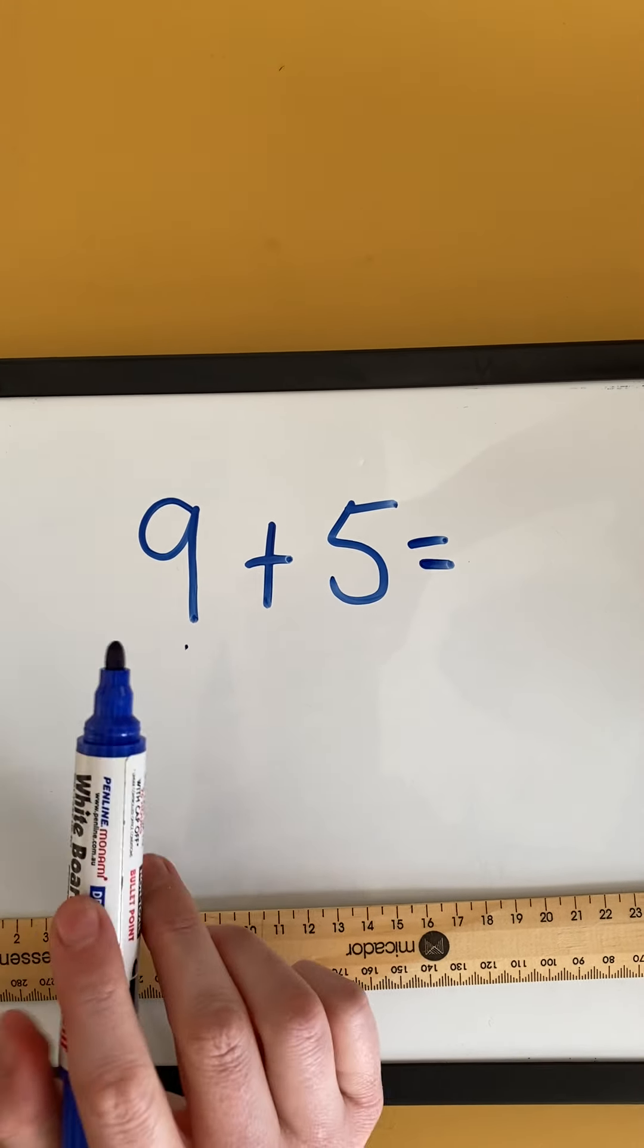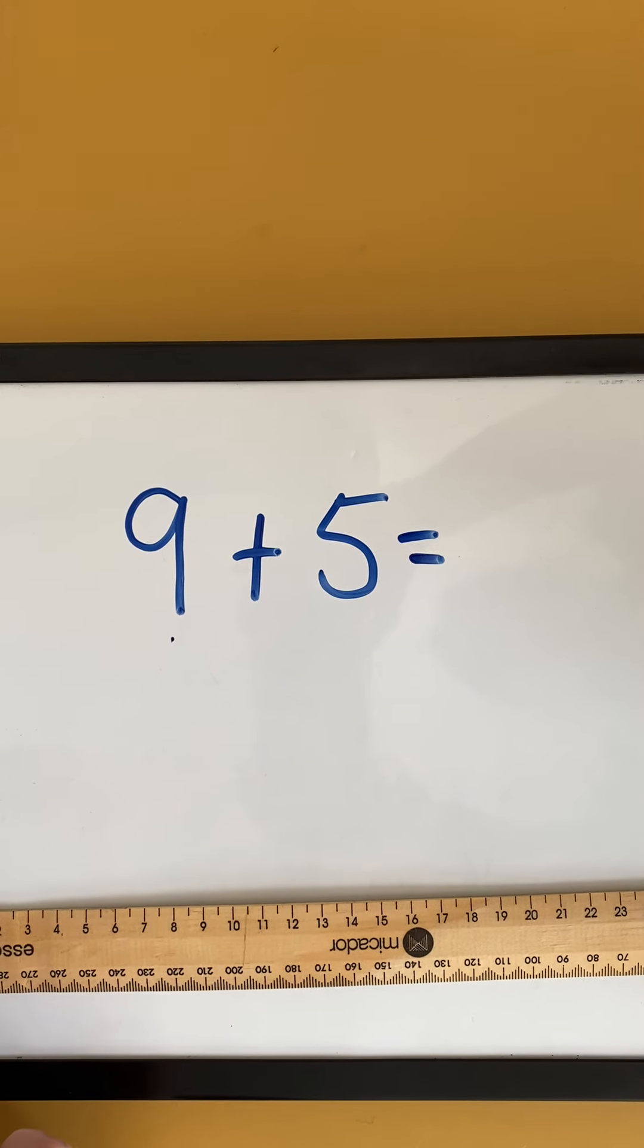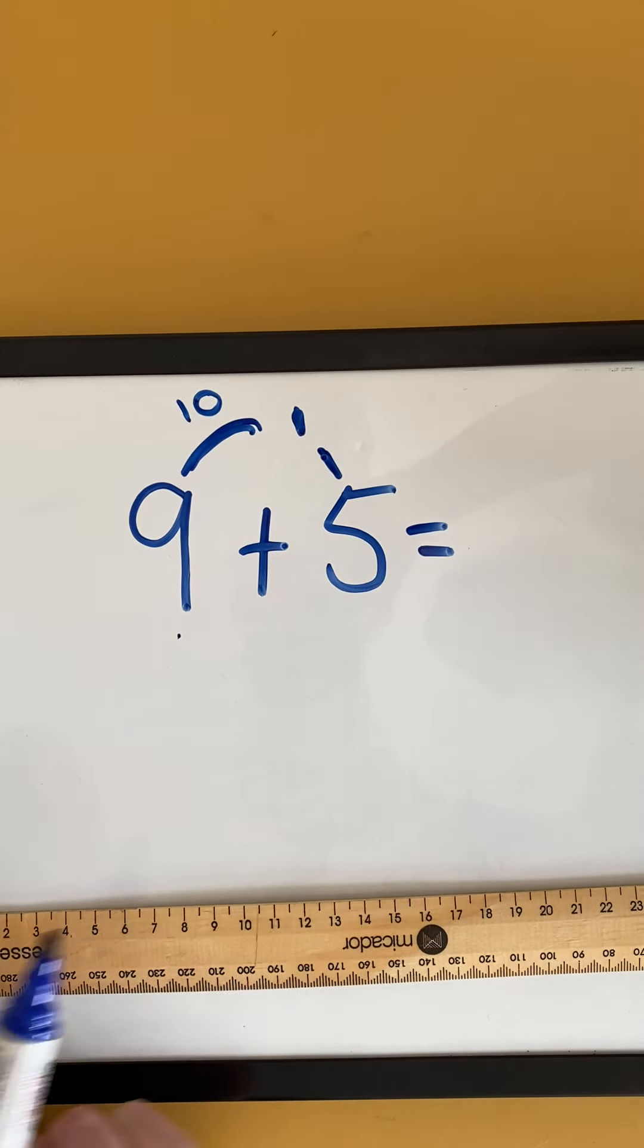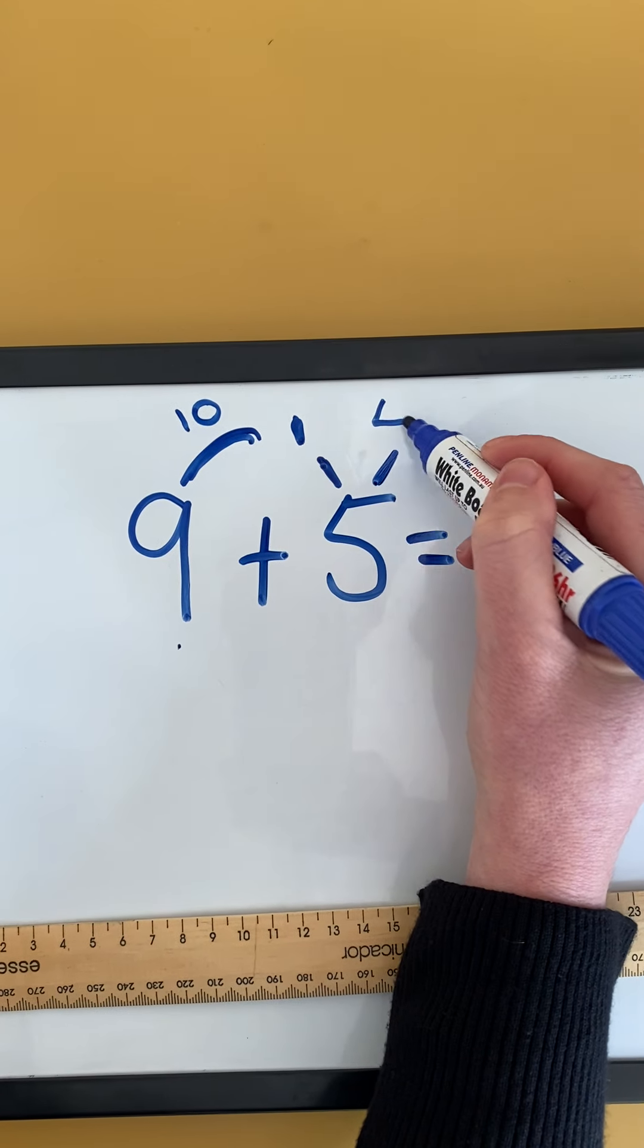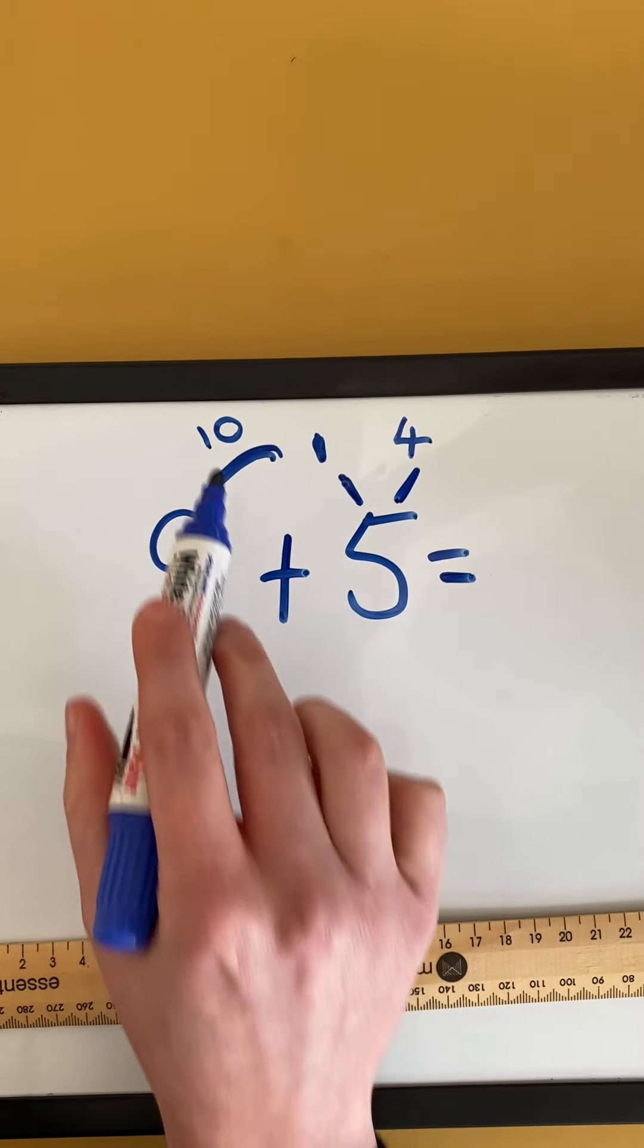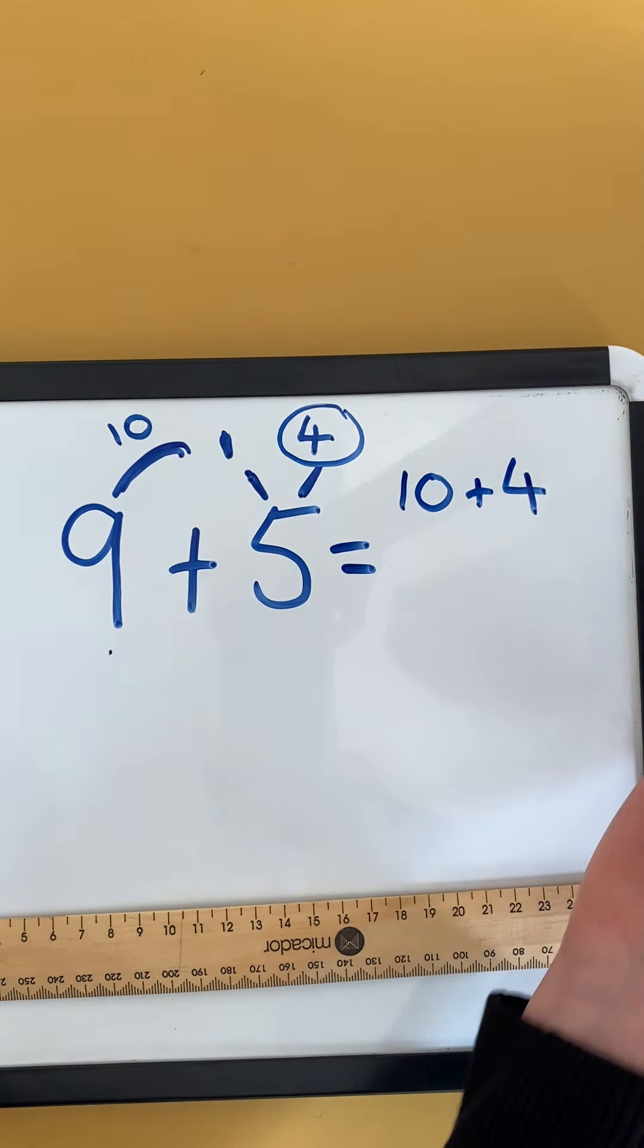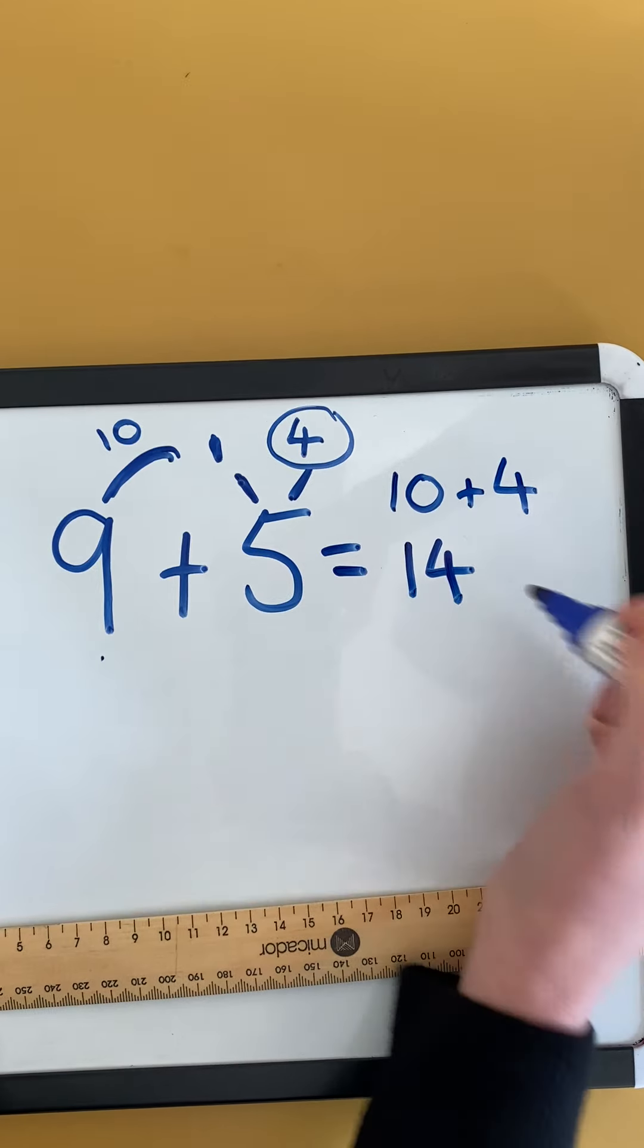So I know my friends of 10, I know 9 plus 1 equals 10. So I'm going to take 1 from this 5 to give to the 9 to make that 10. Now if I take 1 from the 5, I know I have 4 left over because 1 and 4 equals 5. So 10 plus my 4 that's left over is going to equal, I know 10 plus 4 straight away, that equals 14.